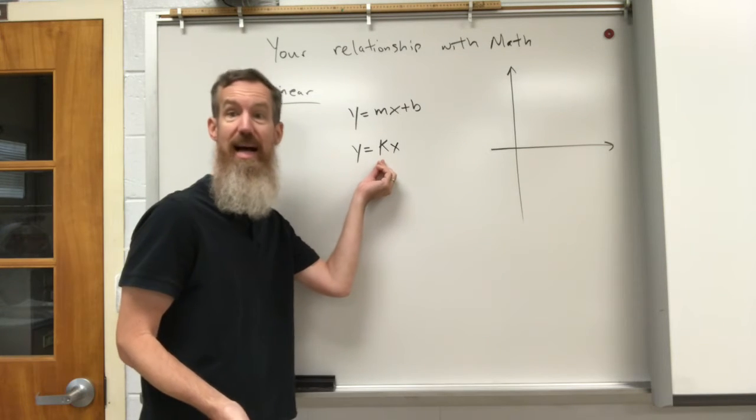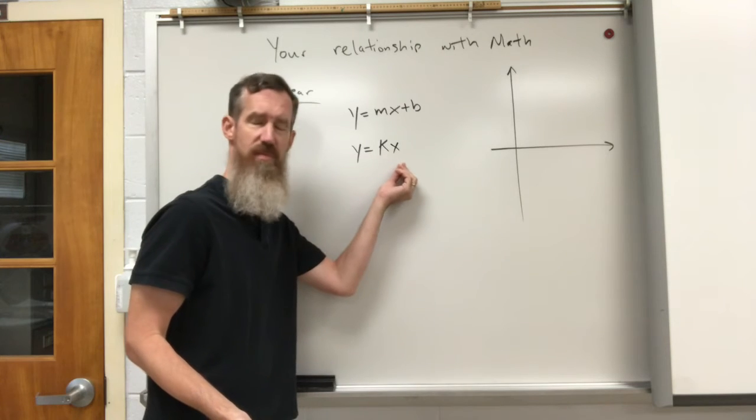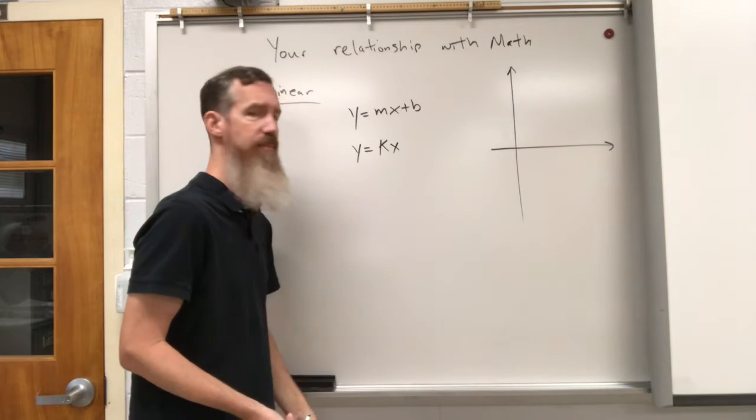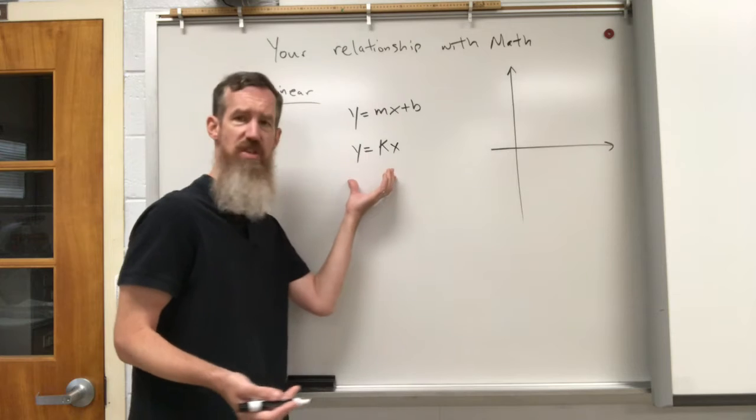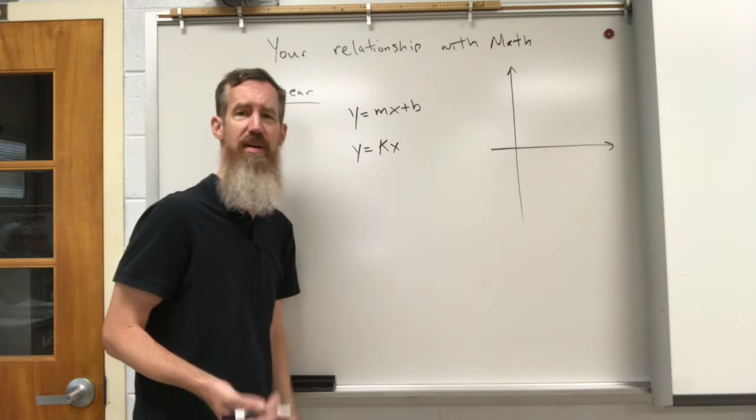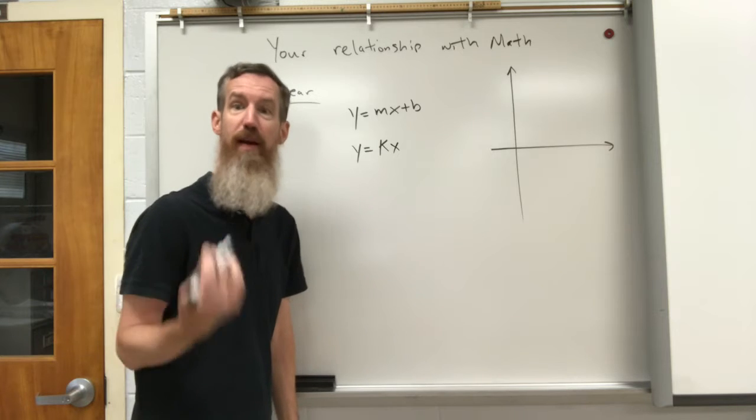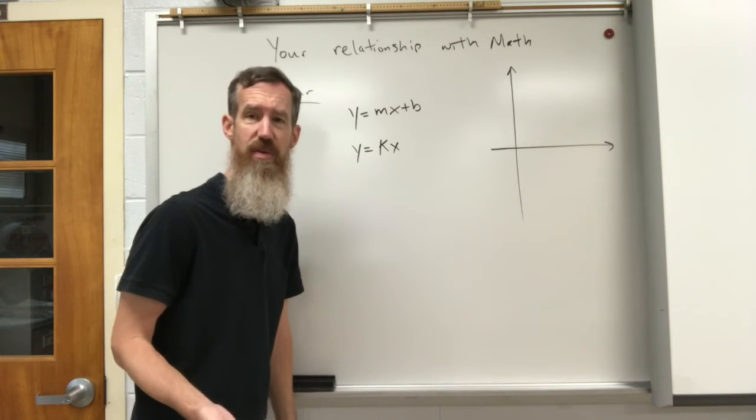If this k value is constant, y goes up, x has to go up. Y goes down, x has to go down by the same factor. In a lot of cases we're going to represent it with actual variables that we're analyzing or looking at in a situation.